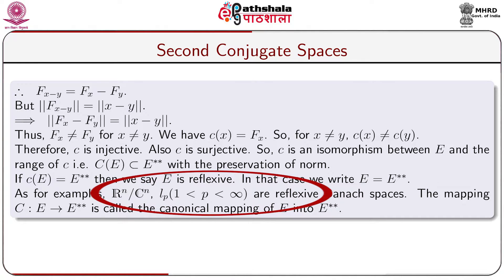That is why ℝⁿ and ℂⁿ are reflexive. For the normed linear space Lp where 1 < p < ∞, we have seen in module 1 that the first conjugate space of Lp is Lq, where 1/p + 1/q = 1. Again, taking the first conjugate space of Lq, we see the conjugate of Lq is also Lp by the relation 1/p + 1/q = 1. So Lp = (Lp)**. Hence ℝⁿ, ℂⁿ, and Lp are all reflexive Banach spaces. The mapping C from E to E** is called the canonical mapping of E into E**.